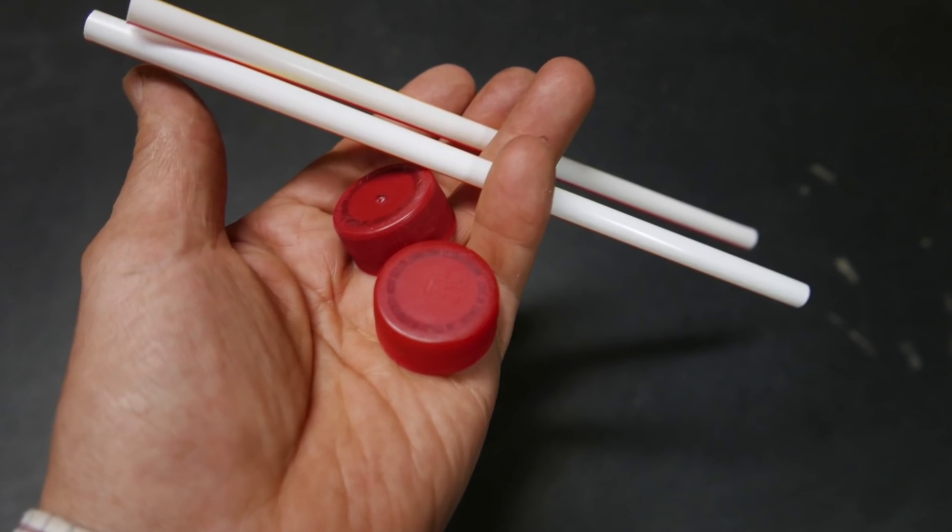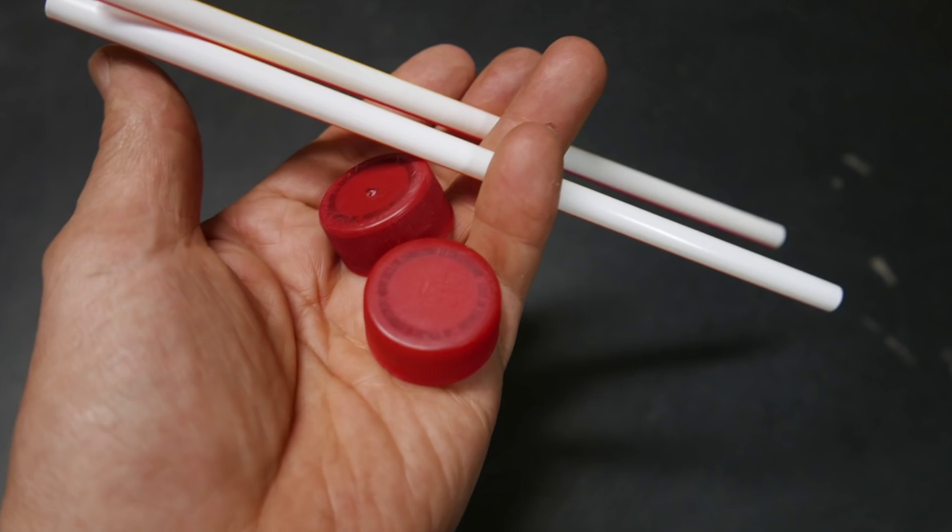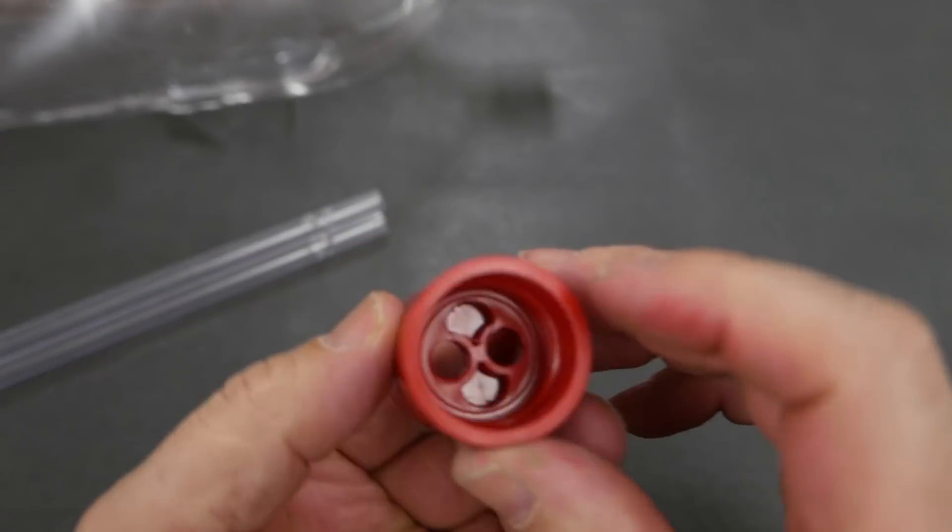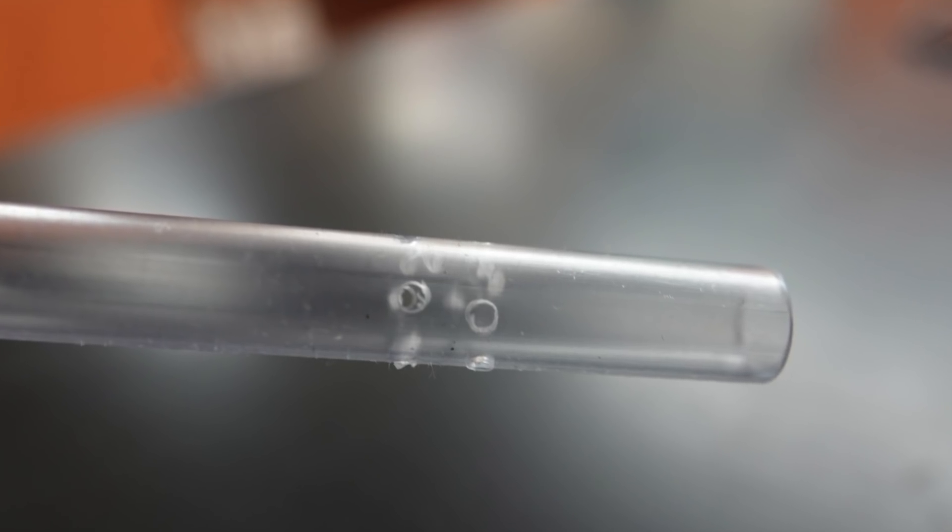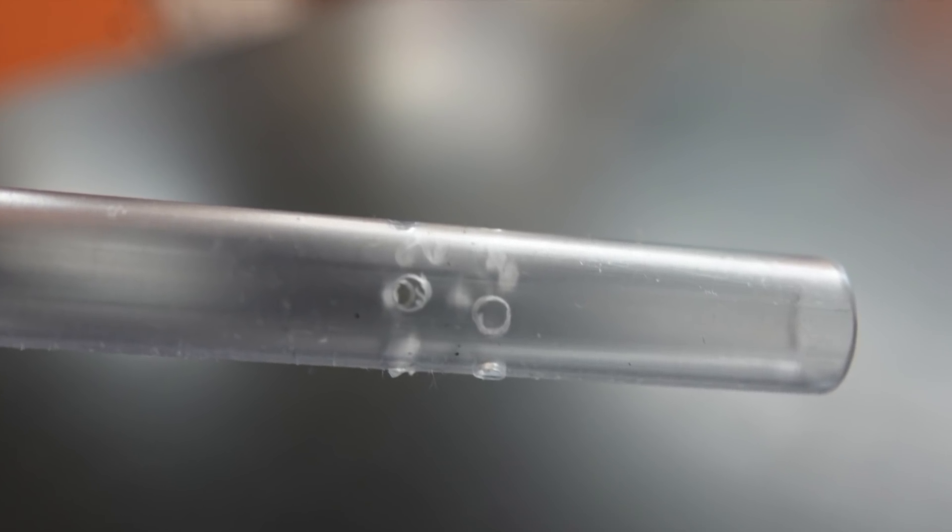The original design started with two soda bottle caps and two straws. This led to a single connector that would hold both the straws and connect both bottles together. A close examination of the straws show that they both have holes drilled in near the one end.